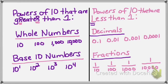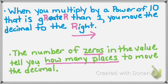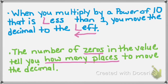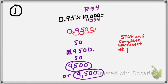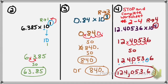Let's review. Powers of 10 that are greater than 1 are whole numbers like 10, 100, 1000, 10,000, or base 10 numbers like 10 to the 1st, 2nd, 3rd, or 4th. Powers of 10 that are less than 1 are decimal numbers and fractions. When you multiply by a power of 10 greater than 1, move the decimal to the right — the number of zeros tells you how many places. When multiplying by a power of 10 less than 1, move the decimal to the left — again, the number of zeros tells you how many places. Sometimes you need to add place value zeros to move the decimal, and sometimes you remove unnecessary zeros from your final answer. Remember, exponents tell you how many places to move the decimal.